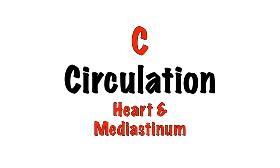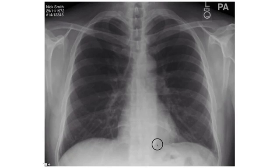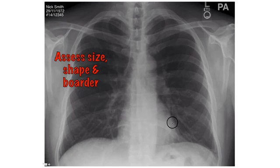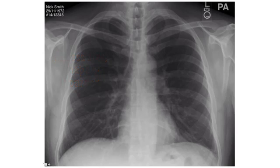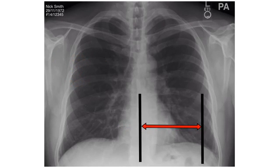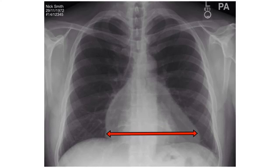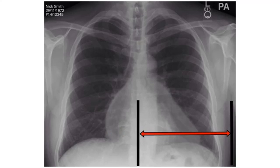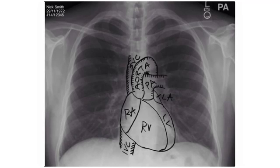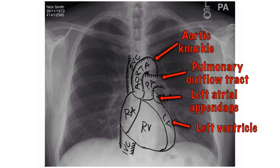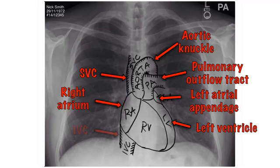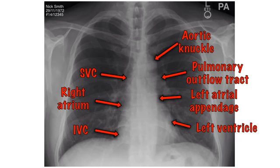C. Circulation. Heart and mediastinum. Look at the size, shape and border of the heart and mediastinum. Heart size is assessed using the cardiothoracic ratio. In a PA film, the heart occupies less than 50% of the width of the thorax. A cardiothoracic ratio of greater than 50% in a PA view is abnormal and indicates cardiomegaly. Structures making up the left border of the mediastinum include the aortic knuckle, pulmonary outflow tract, left atrial appendage and left ventricle. On the right side, the border includes the superior vena cava, the right atrium and the inferior vena cava. These borders should be well defined. A blurred edge could indicate collapse or consolidation of the lung.